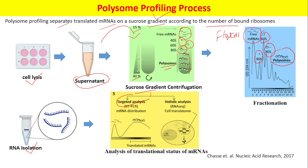For targeted analysis — for example, if we want to analyze a single mRNA molecule — we can perform RT-PCR on the free fractions as well as the polysome-associated fractions. If we find that more mRNA is present in the polysome-associated fraction compared to the free or monosome-associated fraction, that means more of the mRNA molecule is being translated.